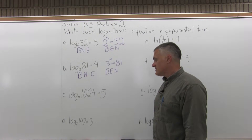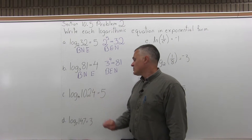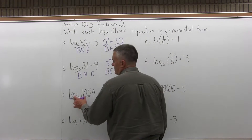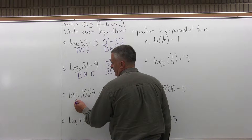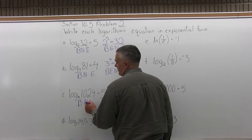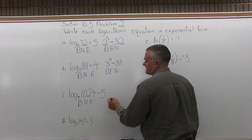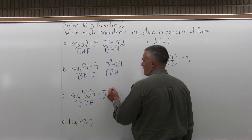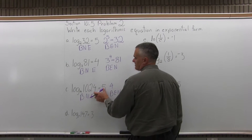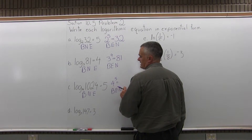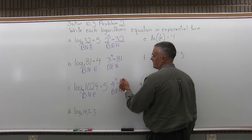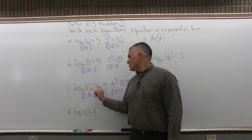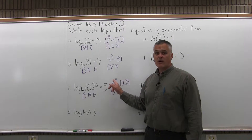Part C says write log base 4 of 1024 equals 5 in its exponential form. Underneath log base 4 of 1024 equals 5, I write Benny — base, number, exponent. To write it as an exponential equation, I write BEN — base, exponent, number. The base is 4, the exponent is 5, then equals, and the number is 1024. So log base 4 of 1024 equals 5 is the same as writing 4 to the fifth power equals 1024.